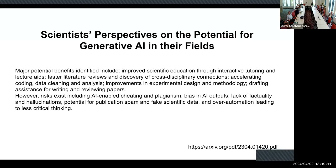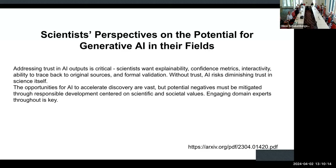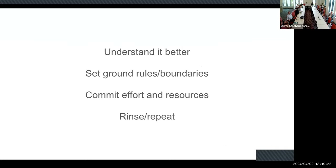There's a lot of feedback from scientists in research studies about how much AI will impact science and the work scientists do. My recommendations are: we need to understand it better on an individual and collective basis, set ground rules and boundaries for what acceptable use looks like, commit effort and resources individually and collectively, and rinse and repeat — because the technology continues to evolve, and every time it takes a leap forward, the implications of its use change as well.